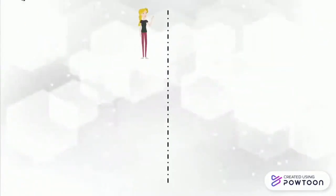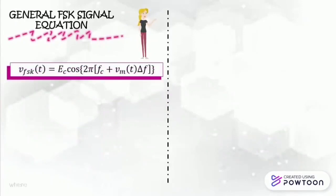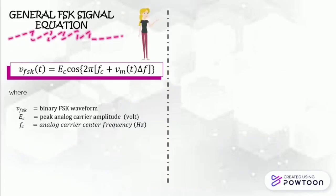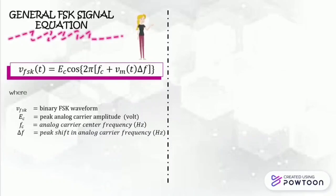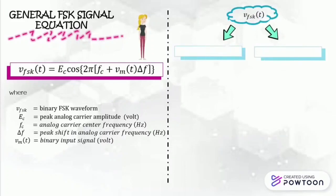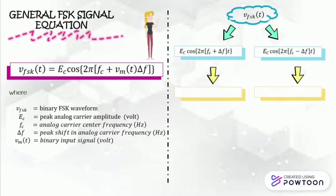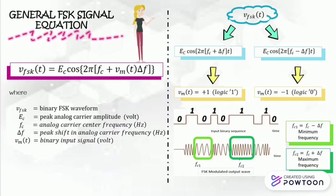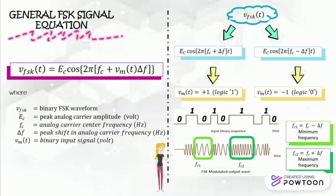Let's take a look at the general equation of FSK signal. VFSK defines the binary FSK waveform, whereas Ec is the peak analog carrier amplitude in volts. Fc is the analog carrier center frequency in hertz. Delta F is the peak shift in analog carrier frequency in hertz. Vm is the binary input signal in volts. The equation can be divided into two parts representing each frequency signal produced. One signal is positive with larger frequency, seen as Fc2 in the wave graph, whereas another frequency is negative with smaller frequency, seen as Fc1 in the wave graph, which is the minimal frequency.